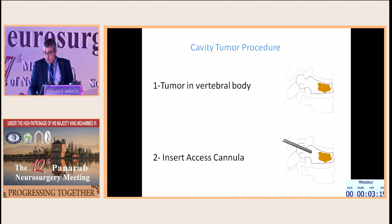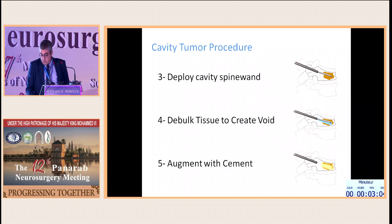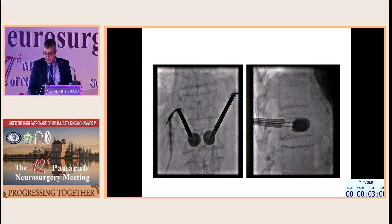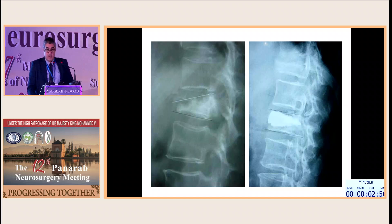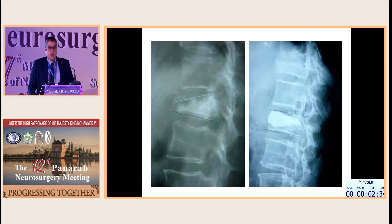For tumors in the vertebral body, we insert the cannula and perform the cavity tumor procedure — creating a void in the bulk of the tissue and augmenting with bone cement. Restoration of vertebral height is good in such cases. In recent years, complications of kyphoplasty, including adjacent level fractures and retropulsion or anteropulsion of bone cement, have been reported in the literature. Nevertheless, kyphoplasty is coming back and vertebroplasty is moving forward.